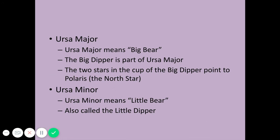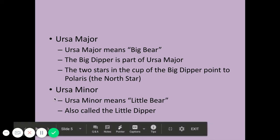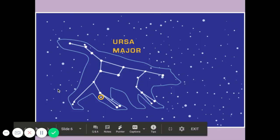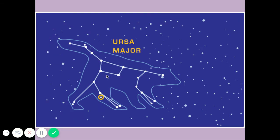Ursa Major means 'big bear' and is also known as the Big Dipper. The Big Dipper is a smaller portion of the Ursa Major constellation and looks like a spoon. Importantly, the Big Dipper points to the north star, Polaris, which can be used as a navigational tool — especially for sailors on the ocean where there are no land masses to identify their location. Ursa Minor is the little bear, also called the Little Dipper.